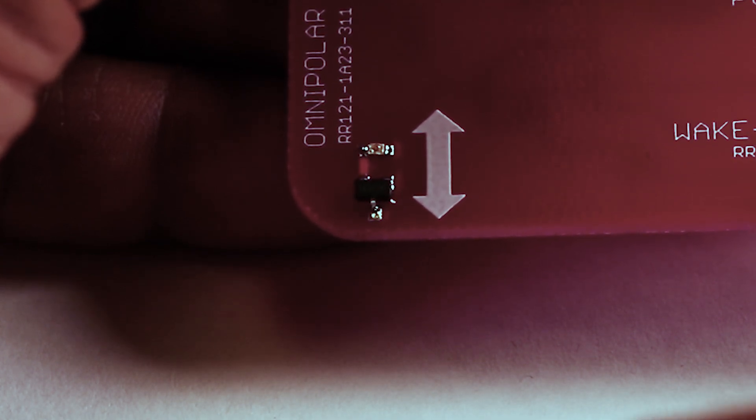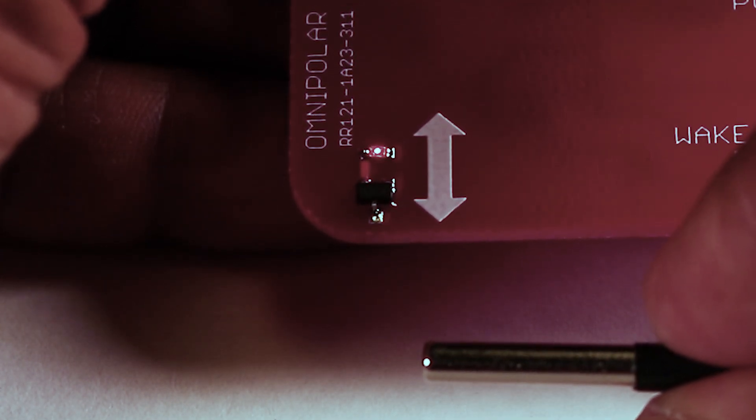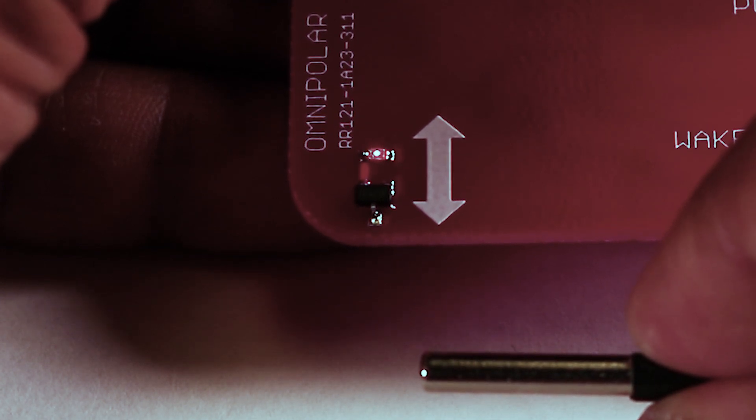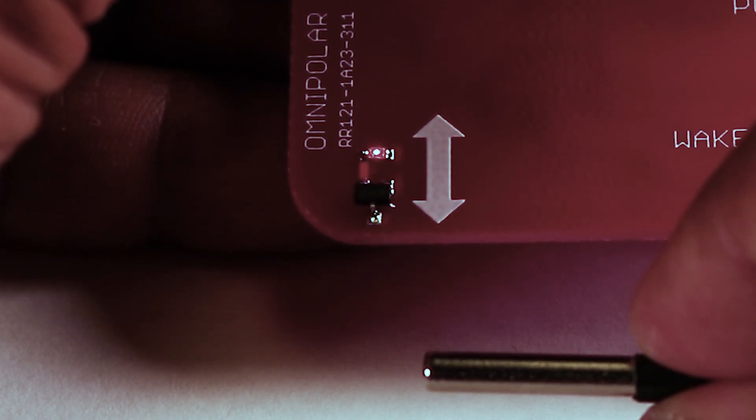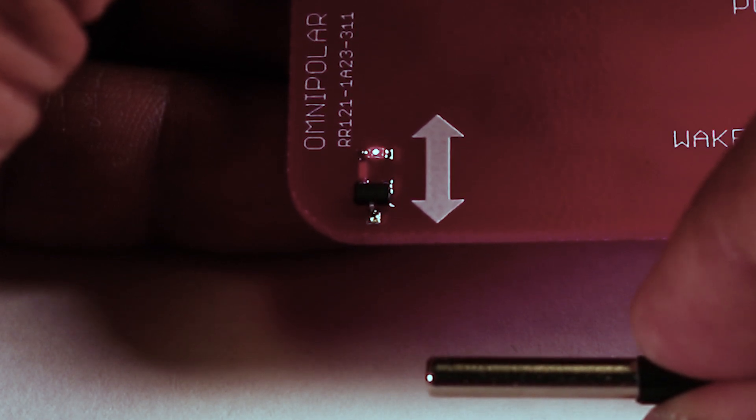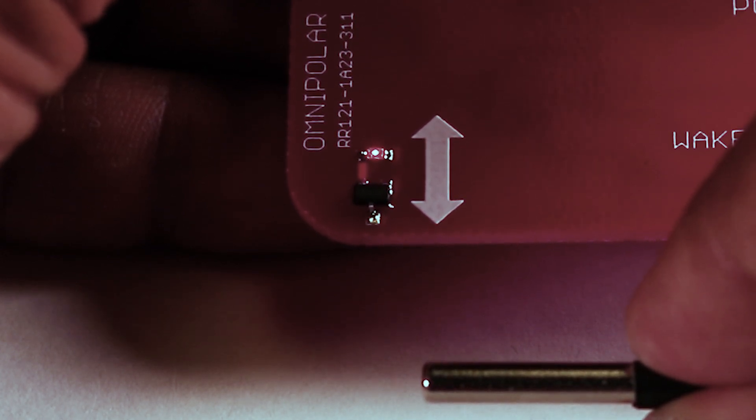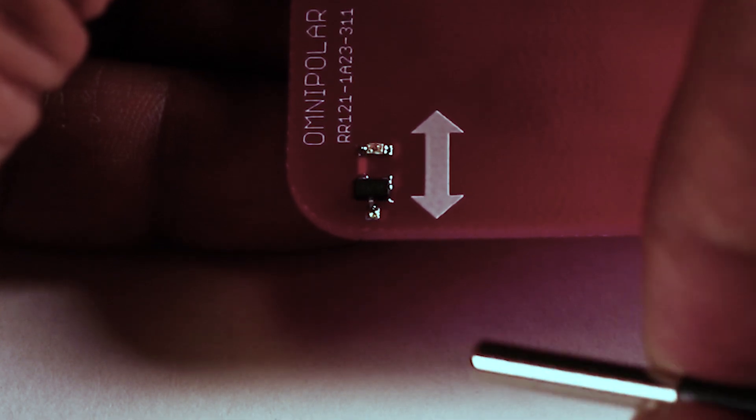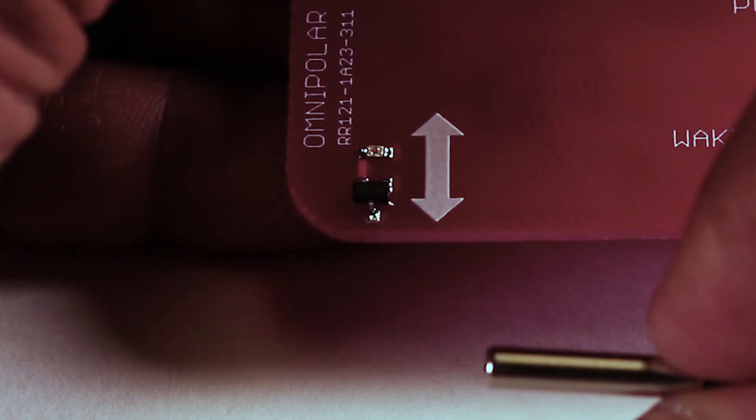It responds to the north pole as well as the south pole of a magnet. For this demonstration, I have the same cylindrical magnet that we use with the omnipolar sensor. It is one-eighth inch in diameter and an inch long. The silver side or the shiny side is a north pole and the black side is a south pole. As I approach the north pole to the sensor, we can see the sensor is turned on at approximately one inch from the magnet.